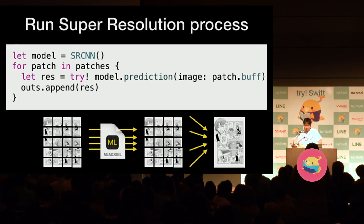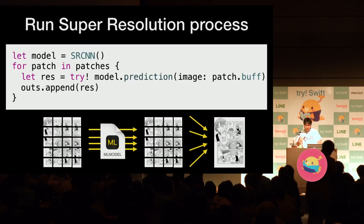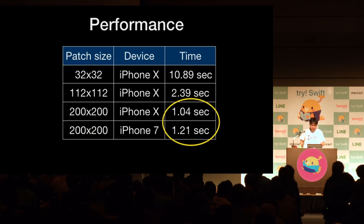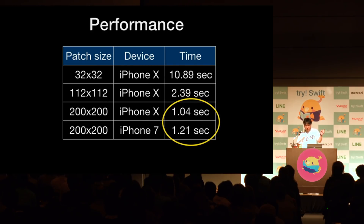Finally, you can call the SR method using Swift code. You just pass patch images to the model and generate high-resolution images. Performance-wise, the most important thing is that you can generate images in just one second on iPhone X or iPhone 7. It's super fast.